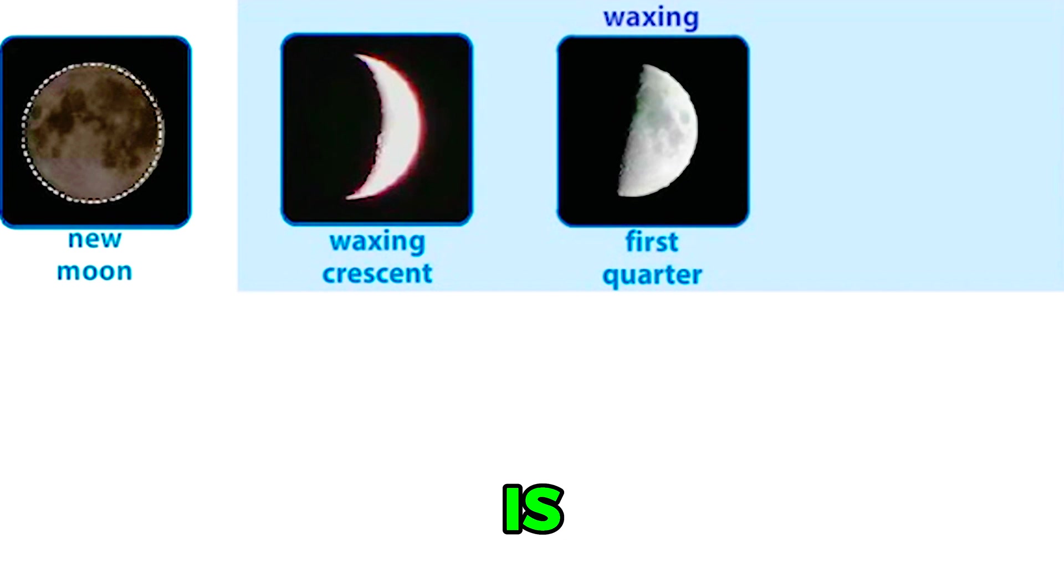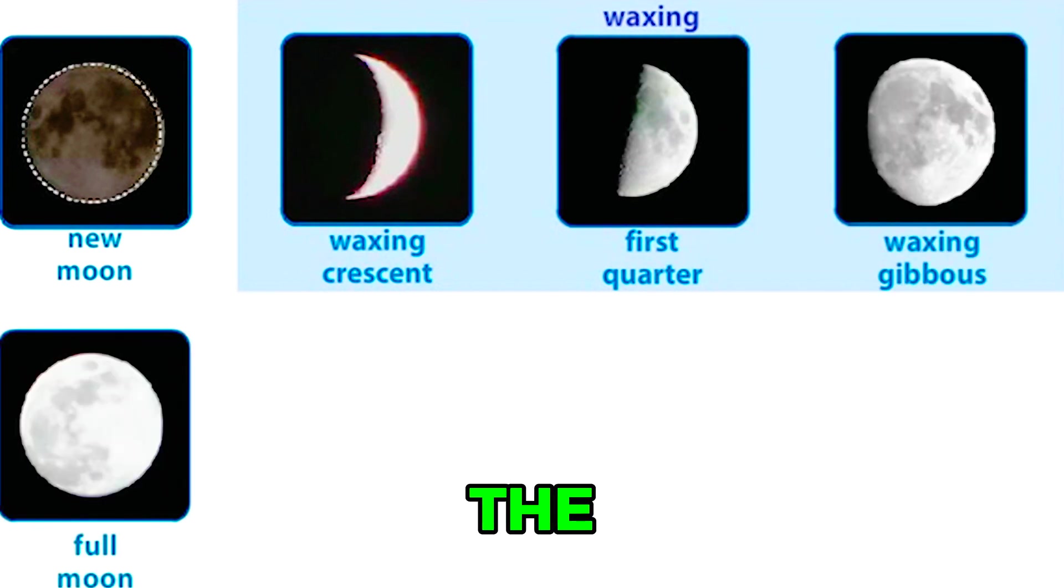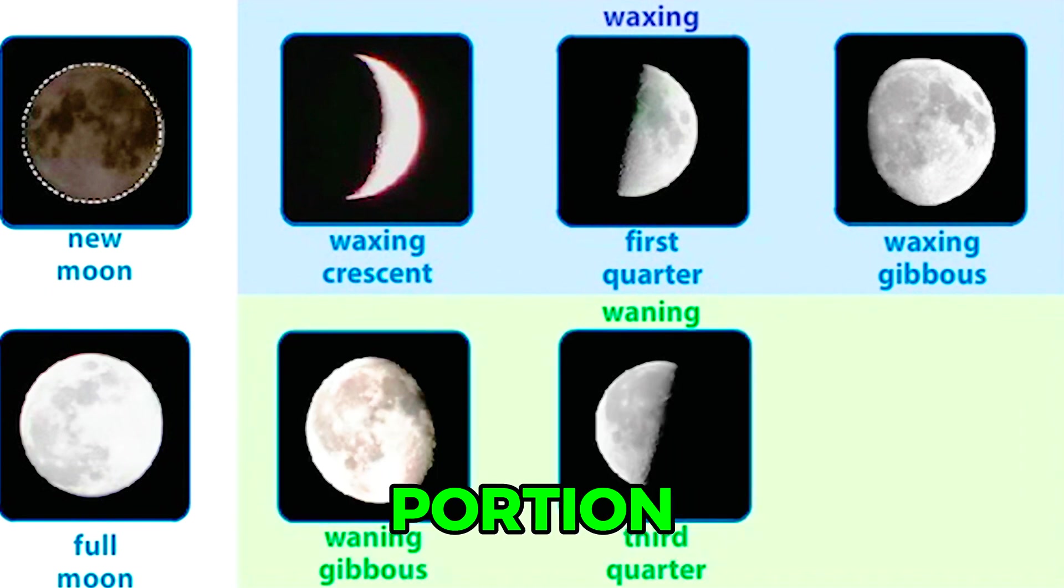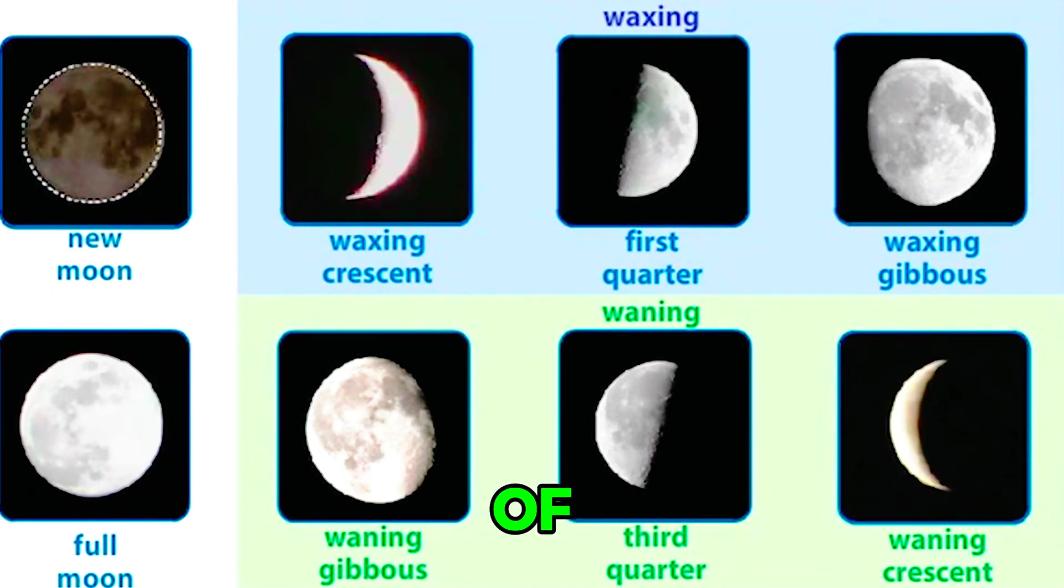A new Moon occurs when the sunlit portion of the Moon is facing away from the Earth. The Moon is waxing when the sunlit portion is getting larger. A full Moon is seen when the side of the Moon facing the Earth is entirely sunlit. The Moon is waning when the lit portion is getting smaller. Crescent and gibbous are shapes of the Moon that we see during a month.